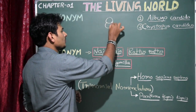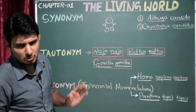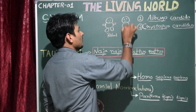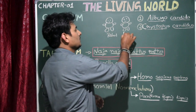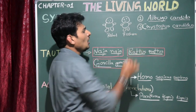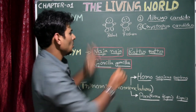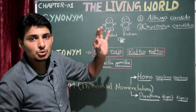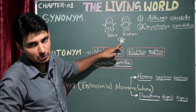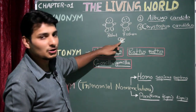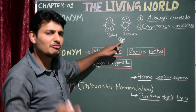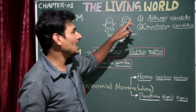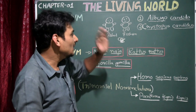Let's imagine a taxonomist named Rahul and his friend Roshan, who is also a taxonomist. Both are working on a particular algal species. Rahul works on this algal species in 2015, while Roshan works on the same algal species three years later in 2018. Rahul identifies, classifies, and gives a scientific name to the algae: Albigo candida.